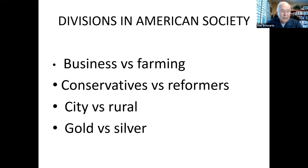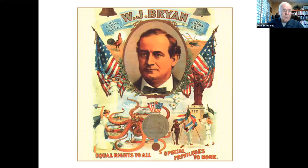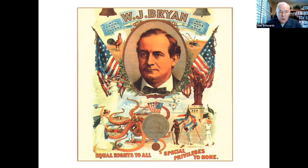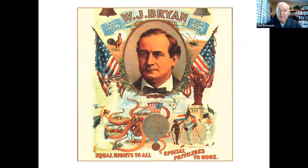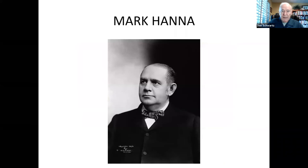Bryan turned the Democratic campaign into a nationwide crusade. He traveled 18,000 miles by train, gave more than 600 speeches — sometimes 20 in a single day — and his rousing oratory convinced millions of farmers and debtors that the unlimited coinage of silver was their salvation. The Republicans savaged Bryan, calling him a socialist, anarchist, communist, lunatic, madman, rabble rouser, traitor, and even a murderer. Some bankers told farmers their mortgages would be foreclosed if they voted Democratic, and employers warned workers not to return if Bryan was elected. McKinley's campaign was run by Mark Hannah, who pioneered many modern campaign techniques.